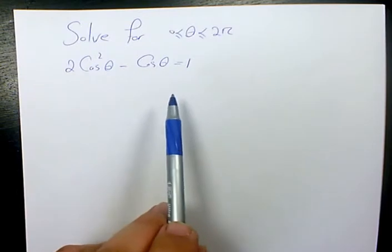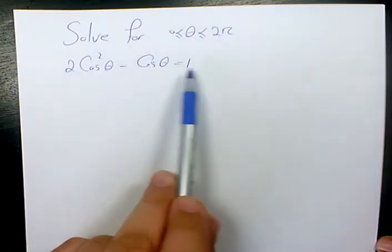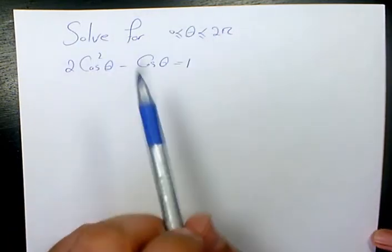So, in this video I want to solve this trigonometric equation, which is 2 cosine squared theta minus cosine theta equals to 1. And I need to solve it for theta between 0 and 2 pi.